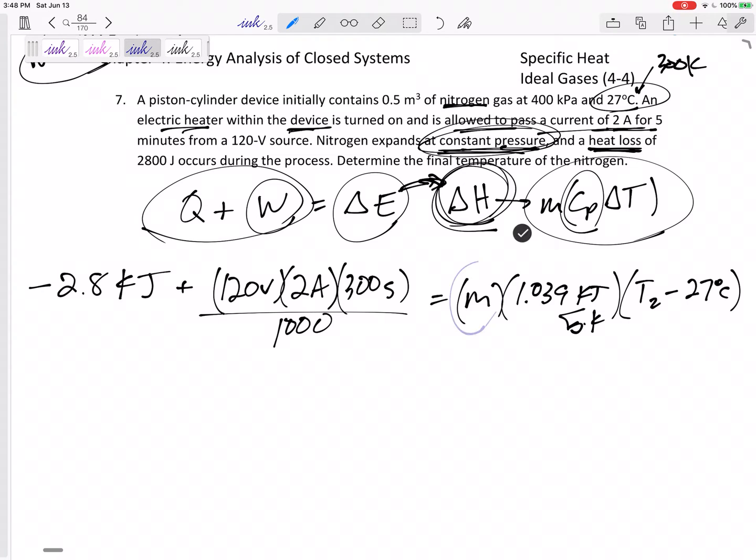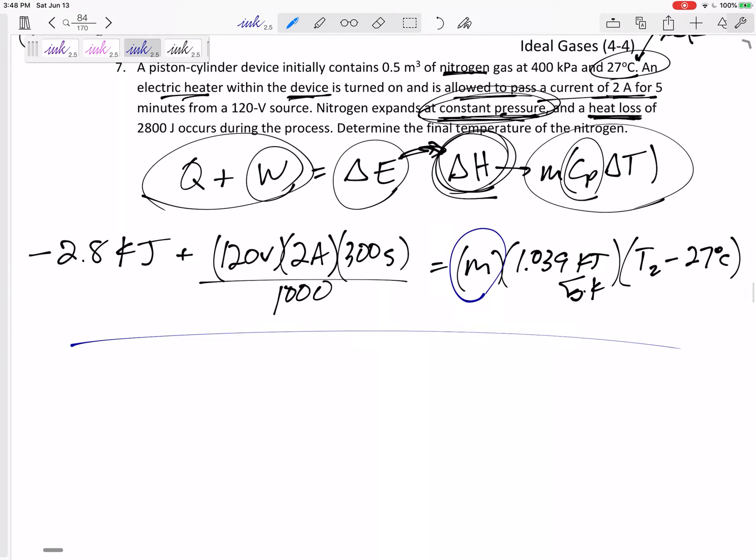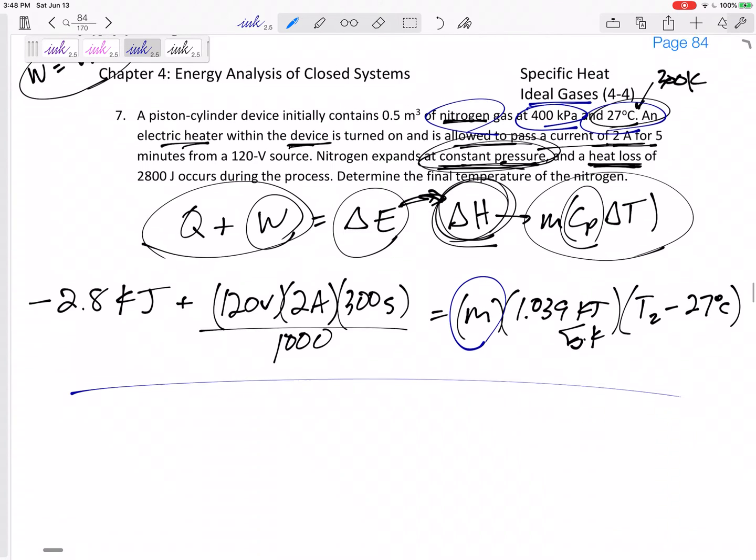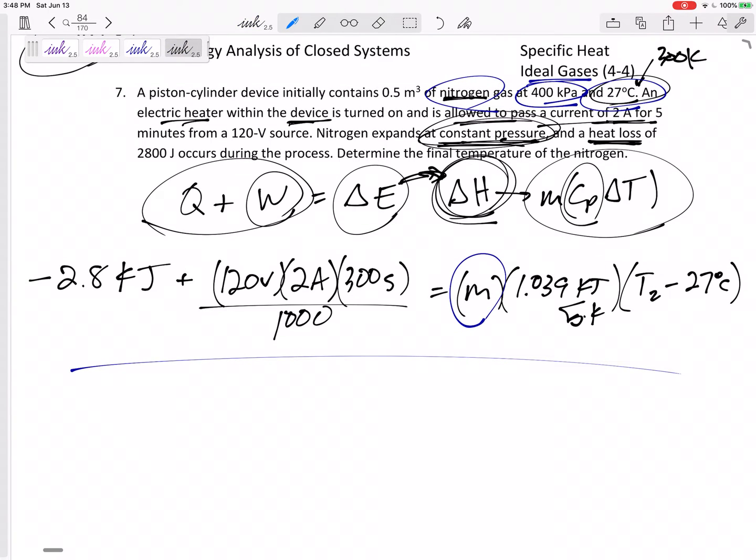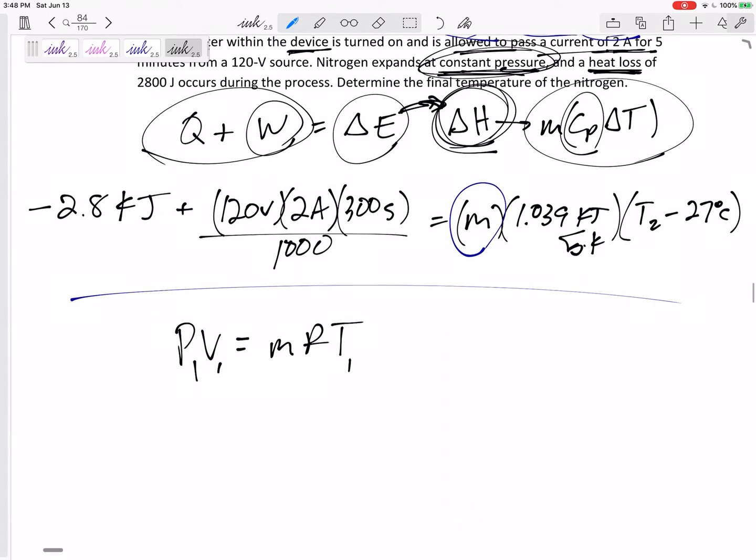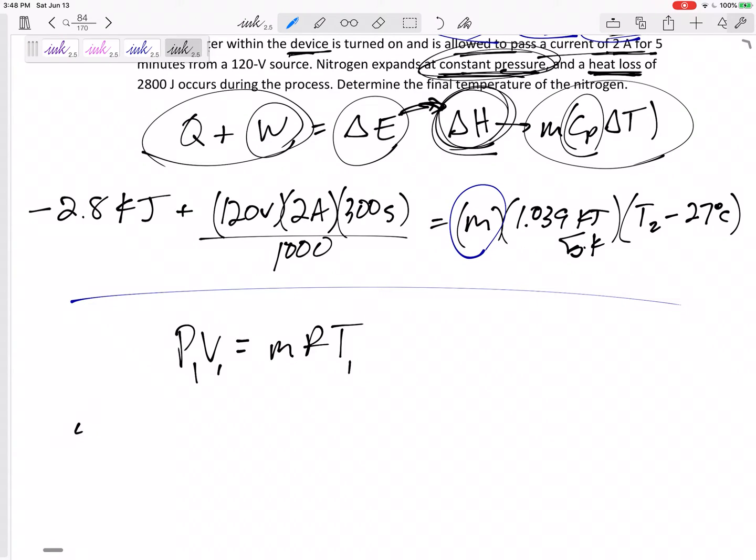But here's my problem: I don't have the mass. But it is nitrogen. It's an ideal gas. I know the pressure and I know the temperature. I can find the mass. PV equals mRT, right? P1V1 - of course this R is not changing, the mass is not entering or exiting - so I can find the mass this way.